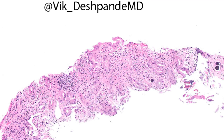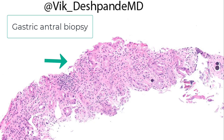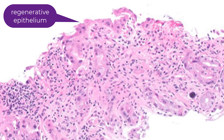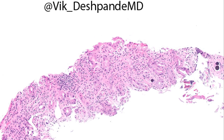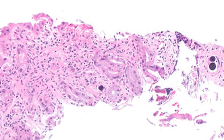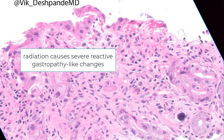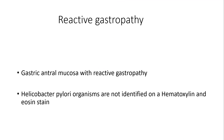This is something you will not see every day. This is the gastric antrum, and you can see a lot of the epithelium is lost. The epithelium looks a little scary, but I can assure you this is not dysplasia — this is regenerative surface epithelium. What's the underlying etiology? Look at those little dark spots: these are Y90 spherules deposited here inadvertently during an embolization procedure in the liver. These emit radiation, and hence you can see the most severe reactive gastropathy-like changes in the stomach when they make their way into it.